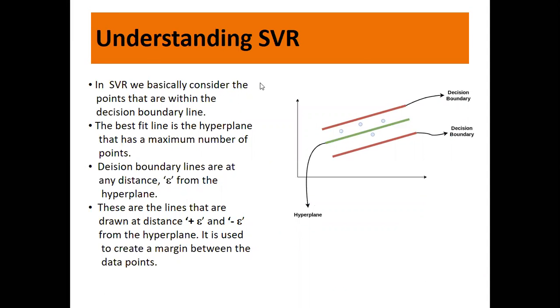The diagram must be looking quite similar to what we have seen in SVM. You have the hyperplane, positive hyperplane, and negative hyperplane. In SVR we call them decision boundaries. Decision boundary lines are at a distance epsilon from the hyperplane—these are positive epsilon and negative epsilon, positive supporting hyperplane and negative supporting hyperplane, used to create the margin between the data points.